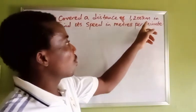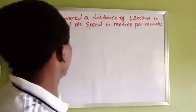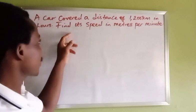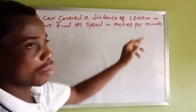A car covered a distance of 1,200 kilometers in two and a half hours. Find its speed in meters per minute.